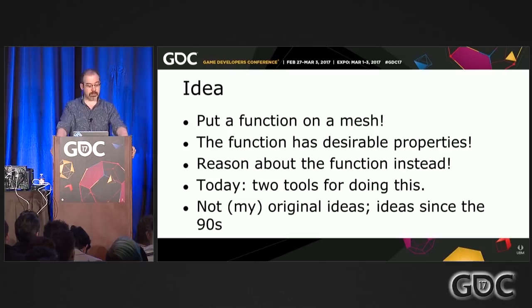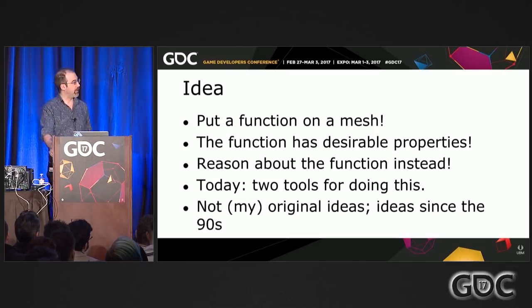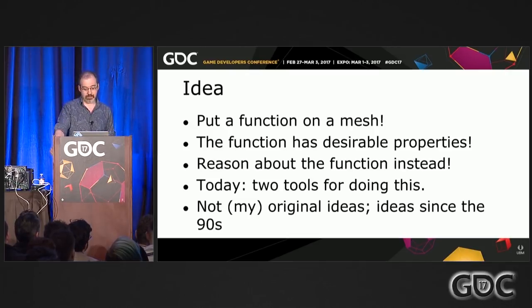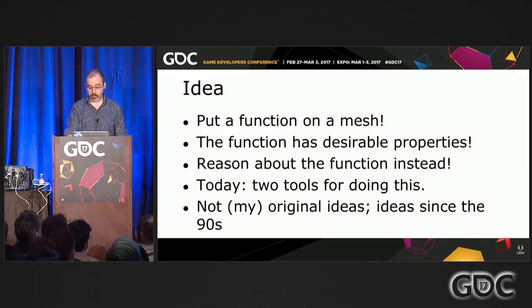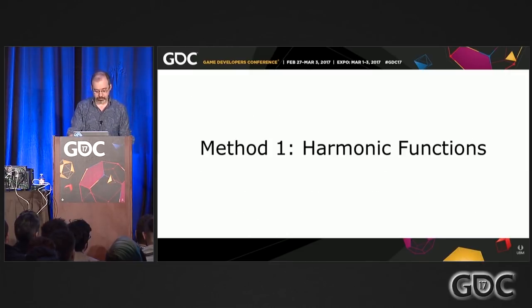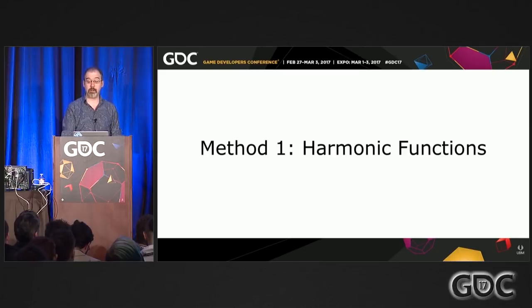We want the function to have certain properties that are desirable for whatever challenge we're facing. We construct the function to have these properties, put it on the mesh, and then reason about the function instead — a function is a much nicer thing than an arbitrary triangle mesh. So today I'm going to talk about two standard tools in geometric mesh processing: harmonic functions and mean value coordinates.